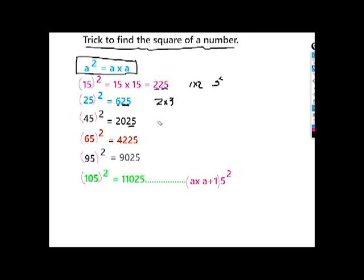45 squared: 5 times 5 is 25. 4 times 5 is 20. So 45 squared is 2025.